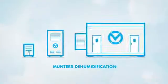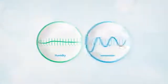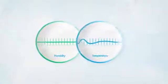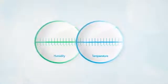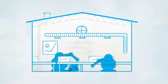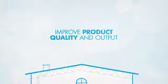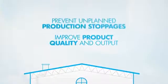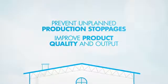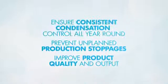Munters' desiccant dehumidification solutions remove excess moisture in the air. This ensures precise control of humidity levels as well as offering temperature control where required. Optimized climate control will improve product quality and output, prevent unplanned production stoppages, and ensure consistent condensation control all year round.